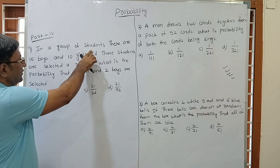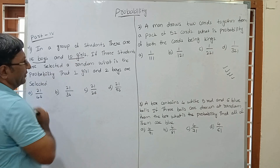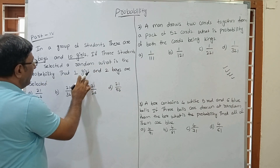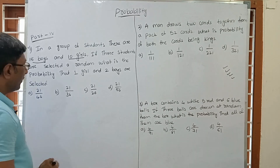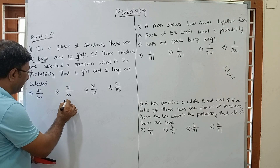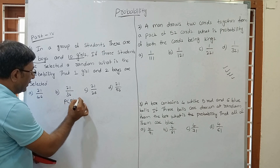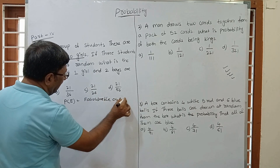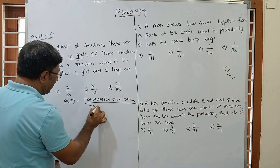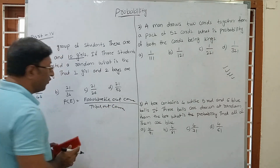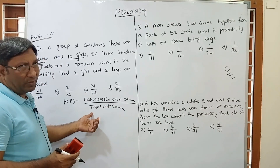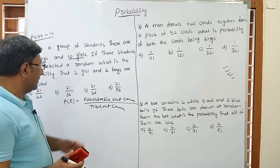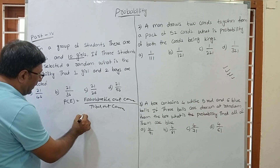The first question: In a group of students there are 15 boys and 10 girls. If 3 students are selected at random, what is the probability that 1 girl and 2 boys are selected? For this type of question, the probability of any event is favorable outcome divided by total outcome.